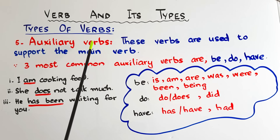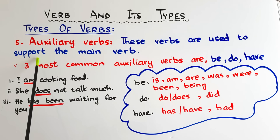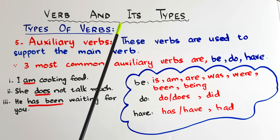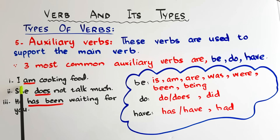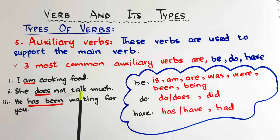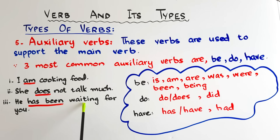The next type is auxiliary verbs, commonly known as helping verbs. These verbs are used to support the main verb, and we need them mostly when dealing with different tenses. For example, 'I am cooking food' — present continuous — so to support the main verb 'cooking' we need the auxiliary verb 'am.' 'She does not talk much' — 'does' supports 'talk.' 'He has been waiting for you' — 'has been' supports 'waiting.'